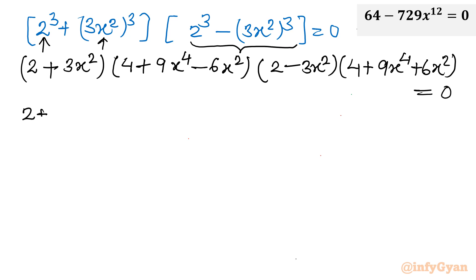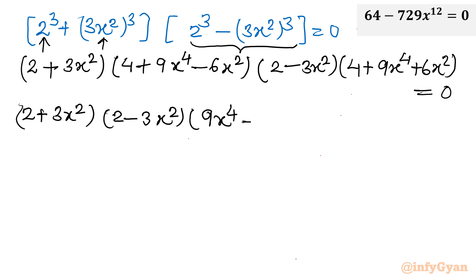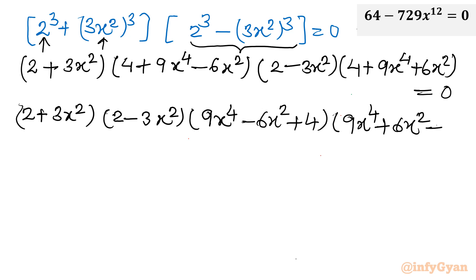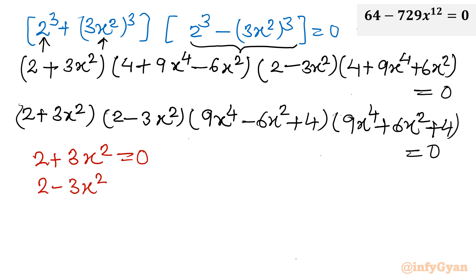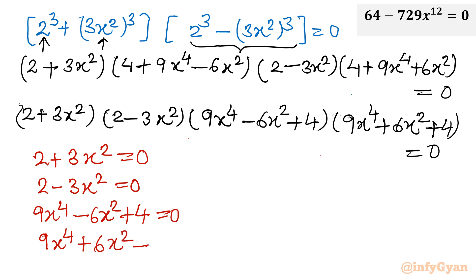Arranging in descending powers, the four factors are: (2 + 3x²), (2 − 3x²), (9x⁴ − 6x² + 4), and (9x⁴ + 6x² + 4) equal to 0.